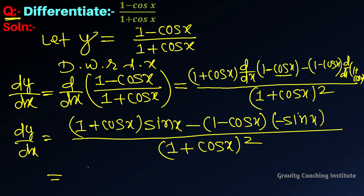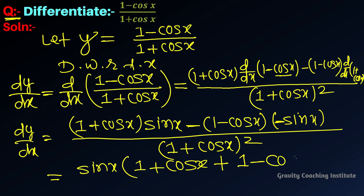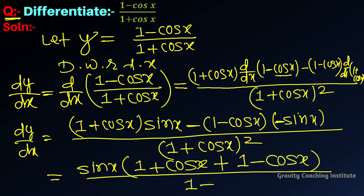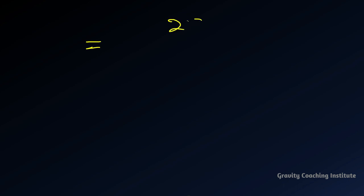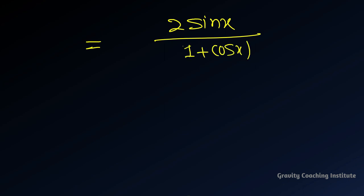तो अब हम इसमें sin x common लेलेंगे। 1 plus cos x होगा, इस minus को इसके साथ multiply करेंगे, plus 1 minus cos x upon 1 plus cos x whole square। तो इसमें cos x से cos x cancel हो रहा है। तो यह equal to 2 sin x upon 1 plus cos x whole square।